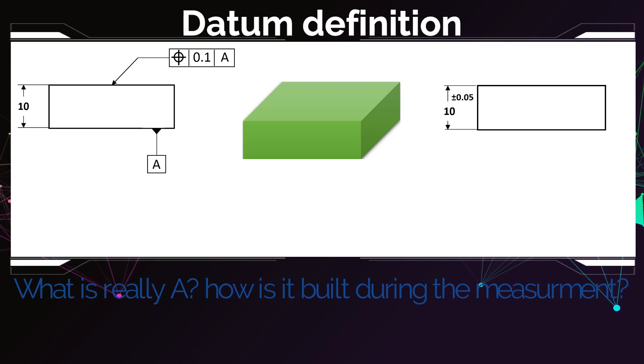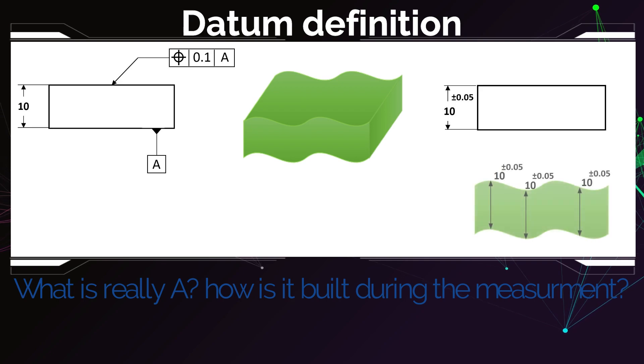10 plus minus 0.05 means that I just measure the distance between the points on the surface. So if my real surface looks like that, then I just keep measuring here two opposite points and they have to be 10 plus or minus 0.05.